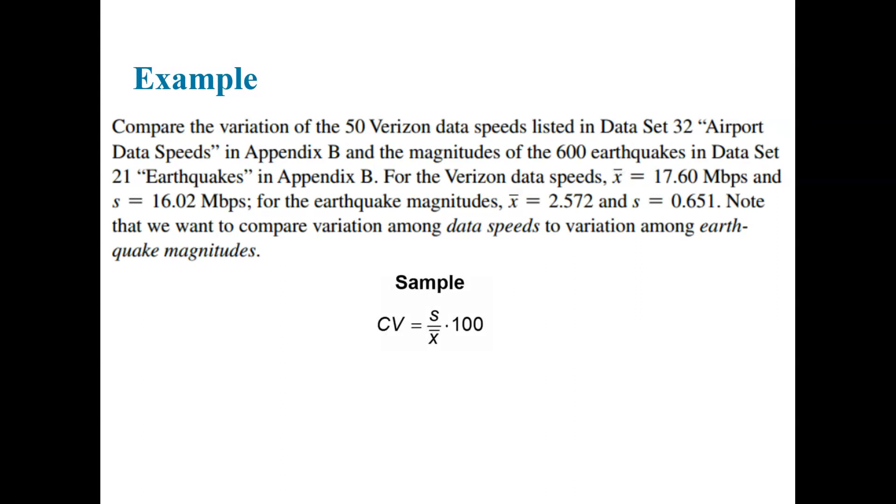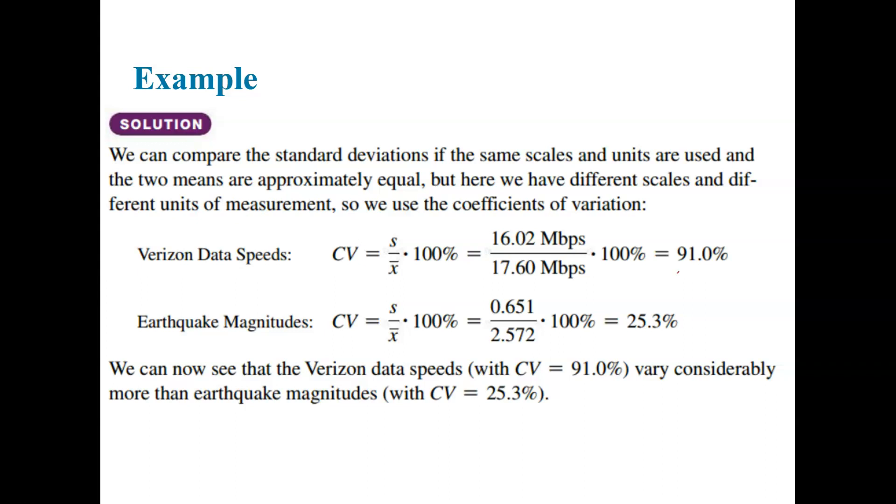So if we're comparing the variation of 50 Verizon data speeds, and we want to compare it for some reason to the magnitudes of 600 earthquakes, for the data speeds, we get the mean of 17.6, and the standard deviation of 16.02. For the earthquakes, the magnitude mean is this, and the standard deviation is that. Now, we want to compare our variation among data speeds to the variation among earthquakes. So we're basically trying to say, is data speed vary more or less than earthquake magnitude? So we'll apply this formula to both, and then we can see, we can kind of normalize it and see what's going on. So when we use that formula, we see that Verizon data speeds vary 91% and earthquake magnitudes vary 25%. To be perfectly honest, I wouldn't want earthquakes to vary that much. I would want them to be pretty steady and similar. I also want my data to be pretty steady and similar, but I care less about that. Earthquakes are kind of like a bigger deal.